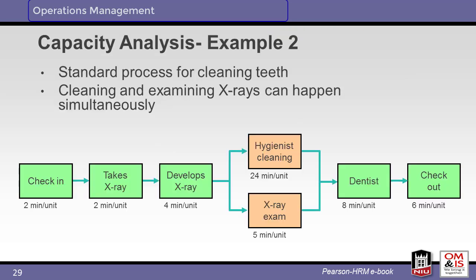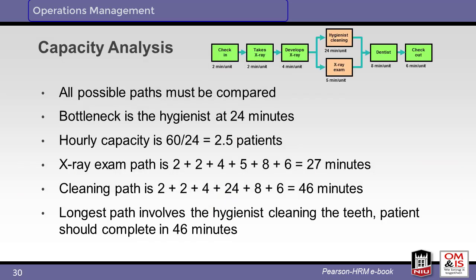For our second example, we consider the process at a dentist's office for cleaning teeth. The process steps and their respective process times are shown. Looking at both possible paths, the bottleneck is the hygienist at 24 minutes. We can see 2.5 patients every hour. The throughput time for both paths has been calculated, with the hygienist path taking the longest time.